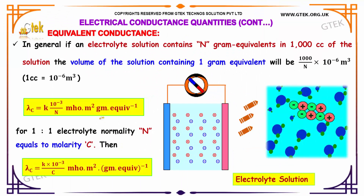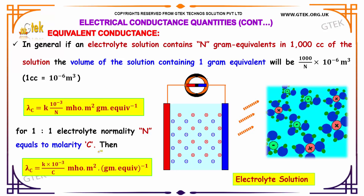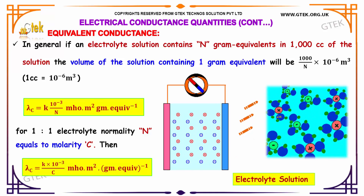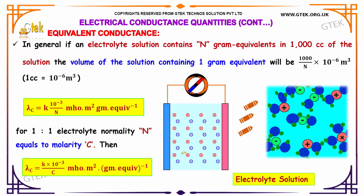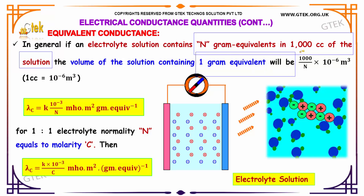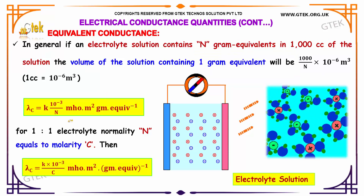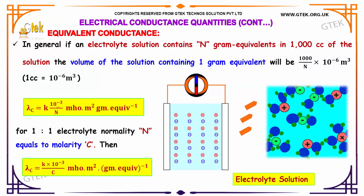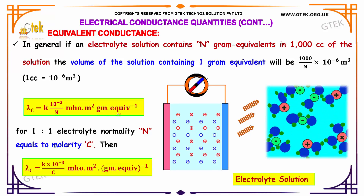In general, if an electrolyte solution contains n gram equivalents in 1000 cc of the solution, then the volume of the solution containing 1 gram equivalent will be 1000 divided by n, multiplied by 10 to the power of minus 6 meter cube — since 1 cc equals 10 to the power of minus 6 meter cube. So the lambda_c value will be k × 10⁻³ divided by n, with units of siemens·meter²·gram-equivalent⁻¹.